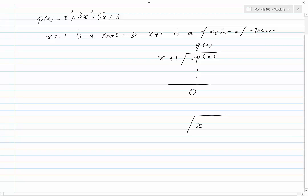P(x) is x cubed plus 3x squared plus 5x plus 3. To divide that by x plus 1,